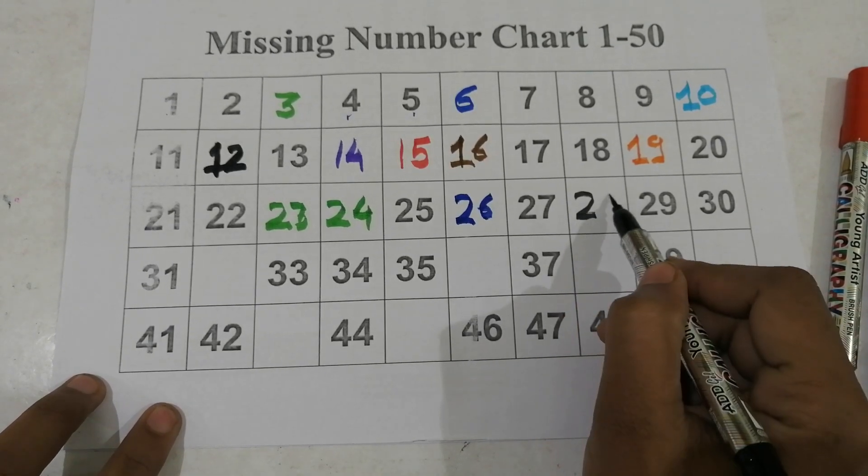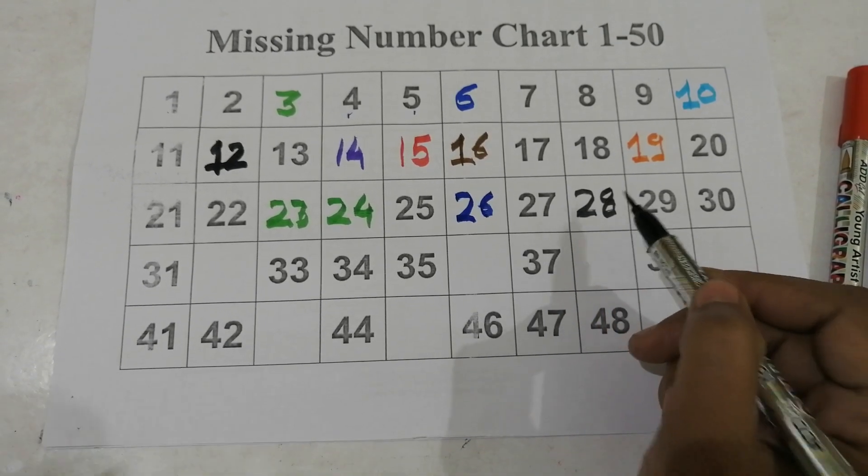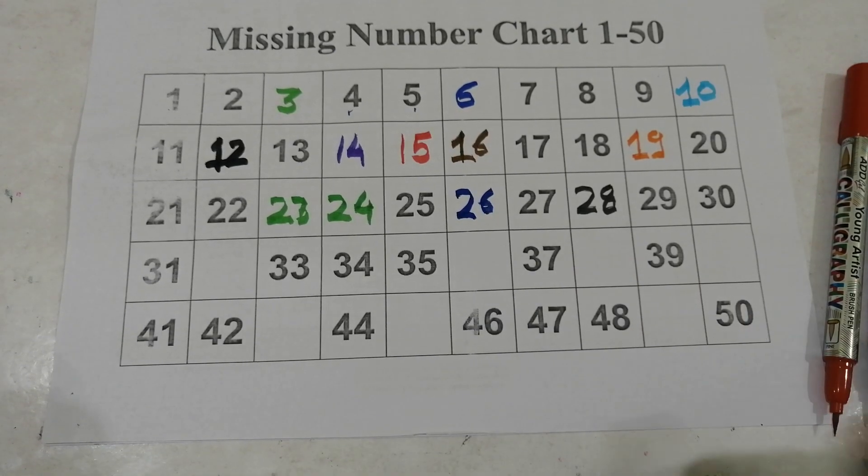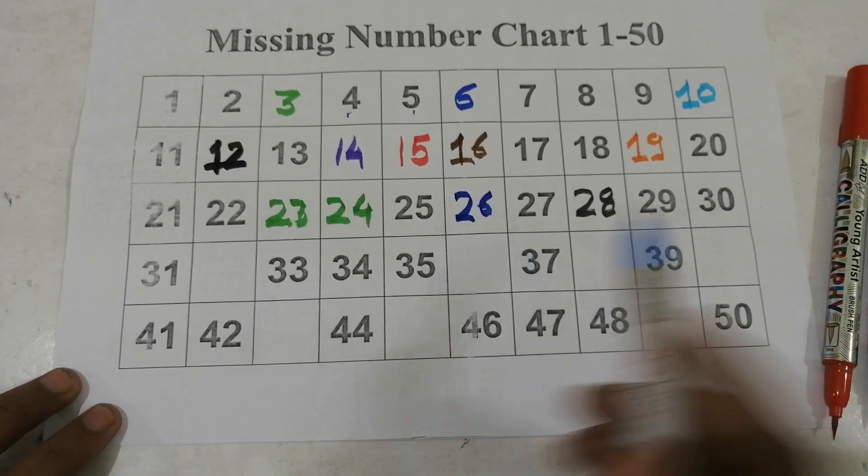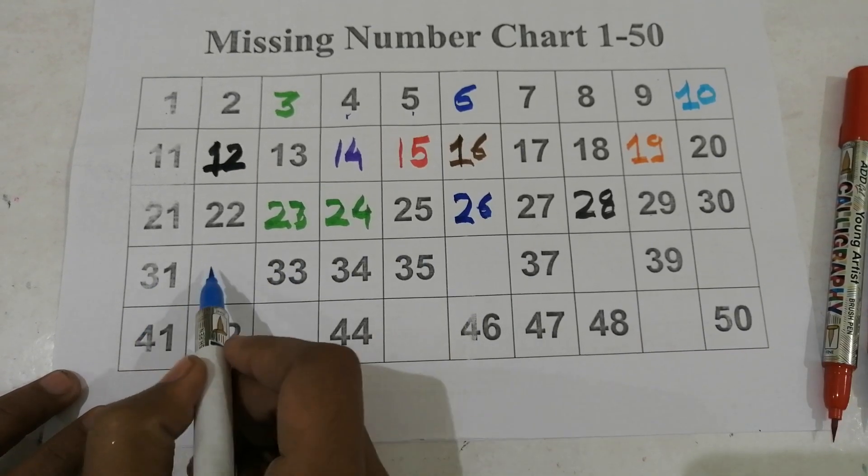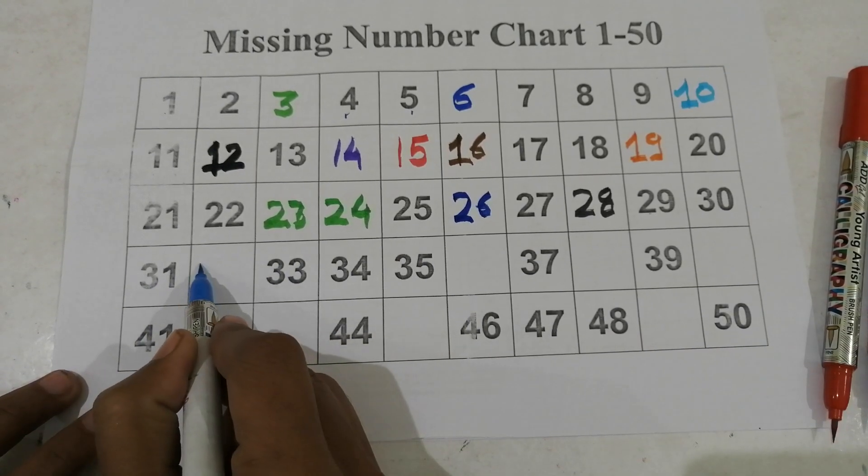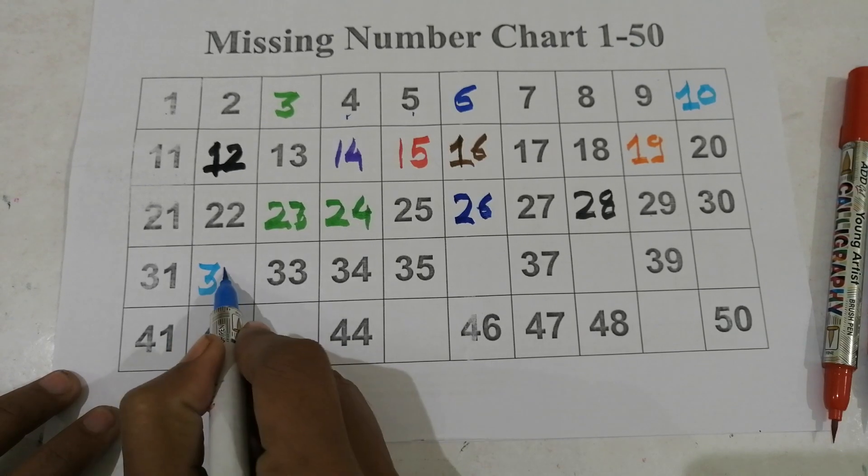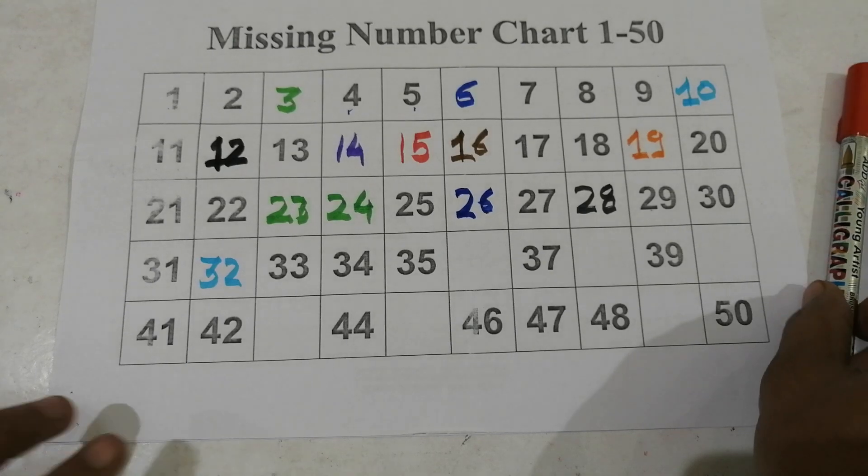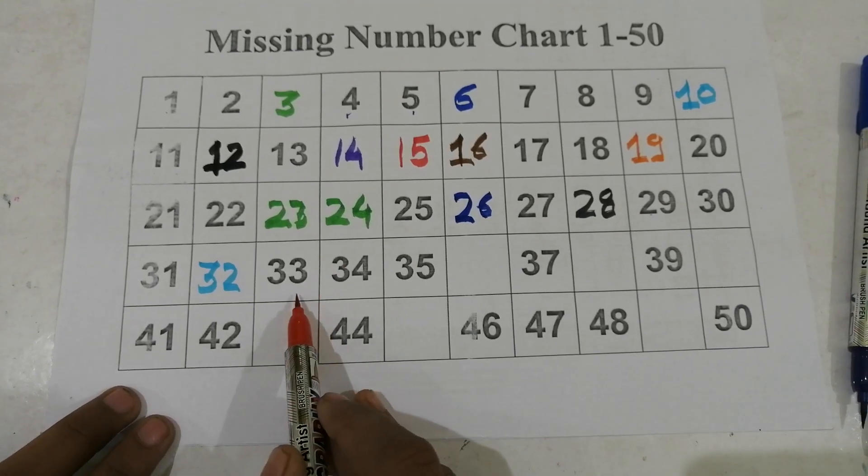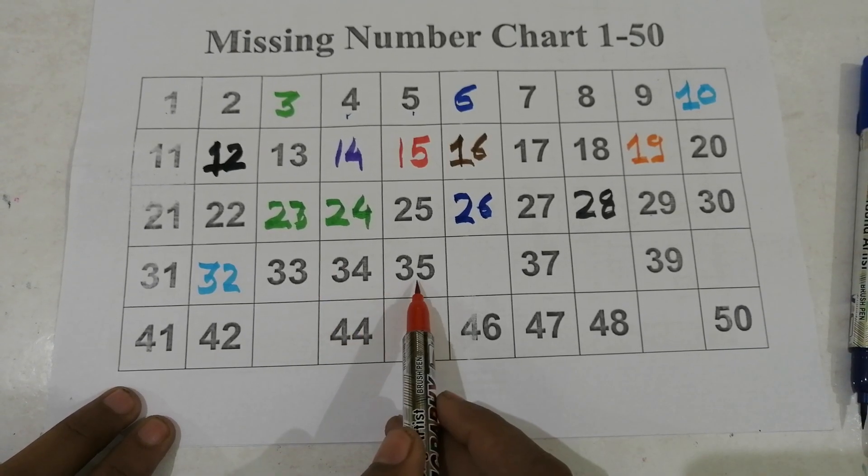Black color 28. What is missing? 29, 30, 31, missing 32 sky blue color. 33, 34, 35.